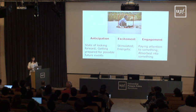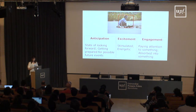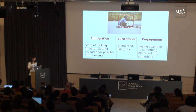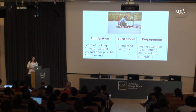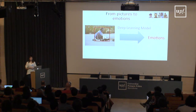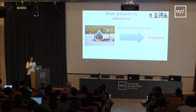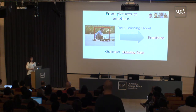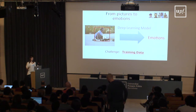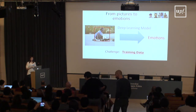We have images of people doing different things in different situations, and we want to recognize emotional information related to whatever they are doing. By analyzing the whole image, we can go far beyond basic emotions — we can recognize emotions like anticipation, excitement, engagement, stimulation, or energy. We are approaching emotion recognition not from facial expression analysis but from a scene understanding perspective, using deep learning models. The first problem we face is that we don't have training data for solving this problem.